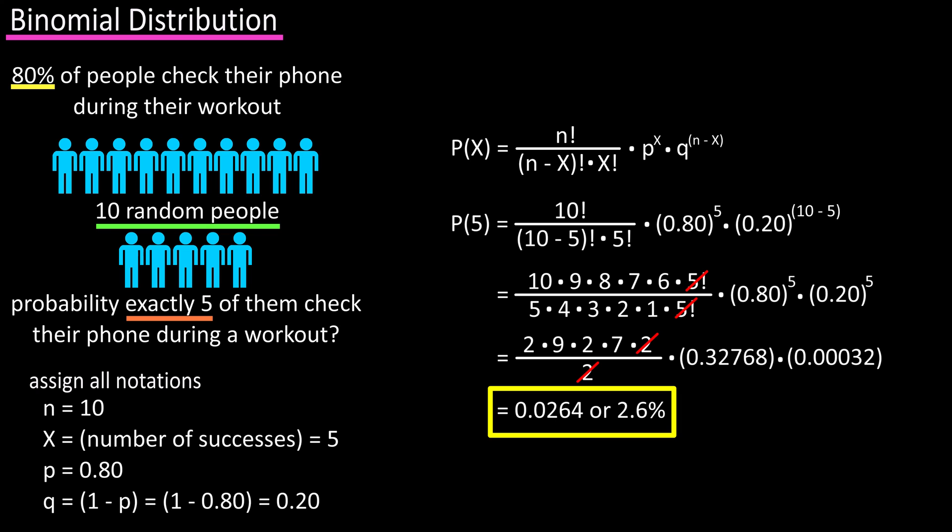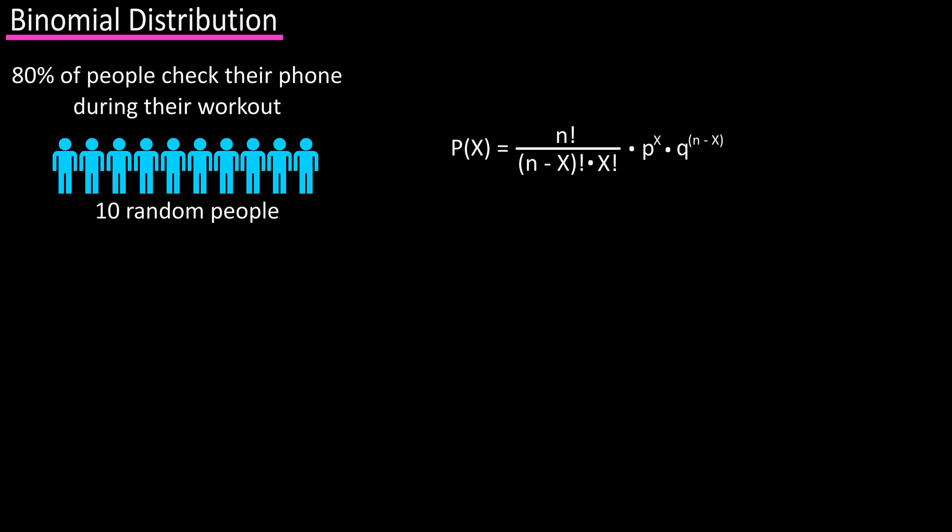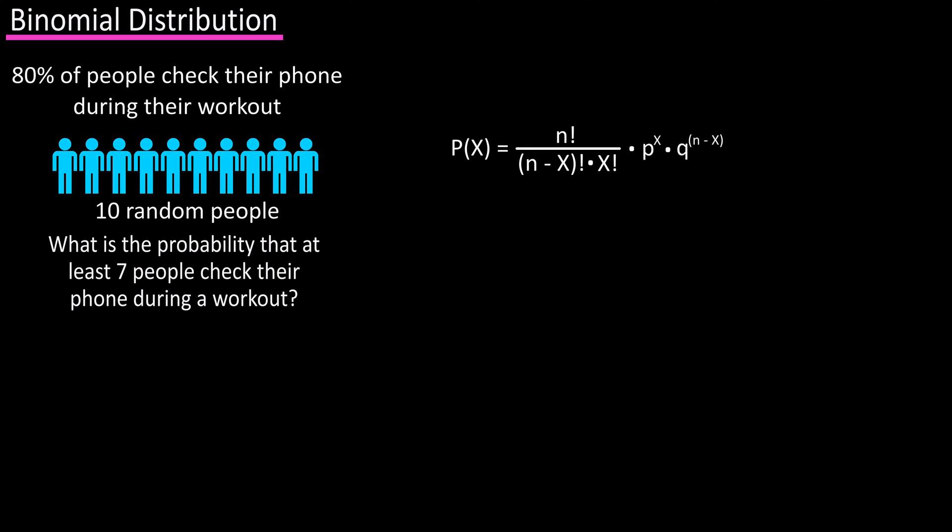The result is 0.0264, or 2.6 percent. So there is a 2.6 percent probability of randomly selecting exactly 5 people out of 10 that checked their phone during their workout. We can reword the question to get a different perspective. Using the same data, 80% checked their phone, if you randomly select 10 people, what is the probability that at least 7 of them checked their phone during their workout? In this question, at least 7 means 7, 8, 9, or 10.